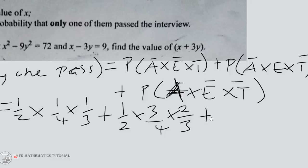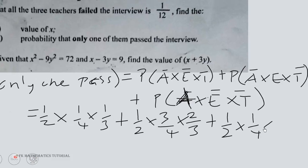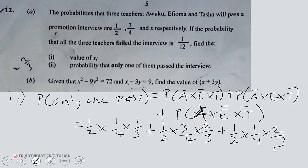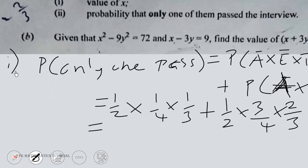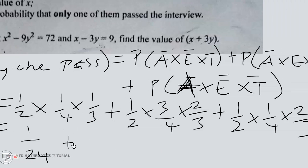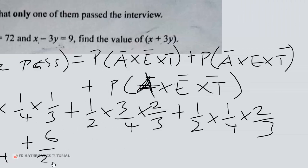Then we have A passed, 1 over 2, E failed is 1 over 4, T failed is 2 over 3. So this will give us 1 over 24 plus 6 over 24 plus 2